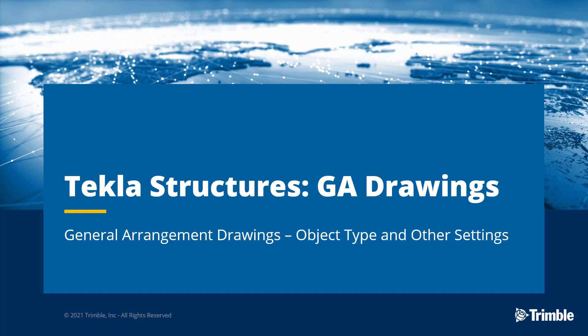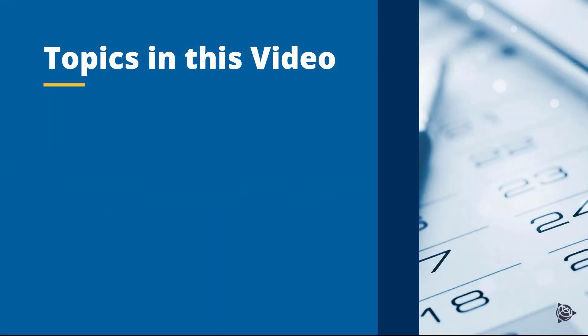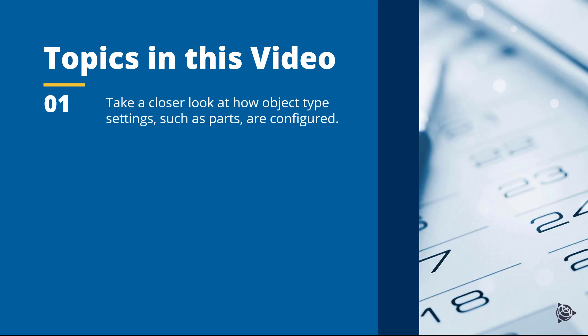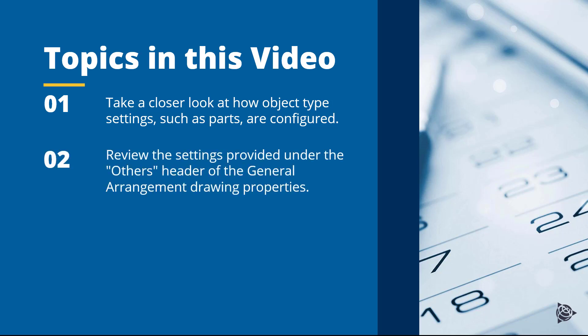Hello, my name is Ryan Page and I'm an application specialist for Tekla Structures. Today in this video we're going to be discussing general arrangement drawings. Specifically, we're only going to be covering a few key points. First, we're going to take a closer look at how object type settings are configured. Objects can refer to parts, rebar, and welds, and how those objects are represented in our drawings. Then we're going to review the settings provided under the Others header of our GA drawing property dialog and how those apply to our drawings in general. So with that, let's begin.